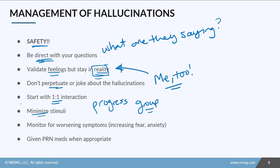But you always want to start slow just to keep them from being overwhelmed. Then monitor for worsening symptoms like increasing fear and anxiety, and you can always give PRN meds if appropriate.